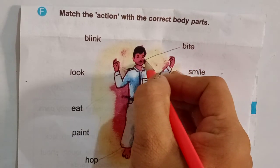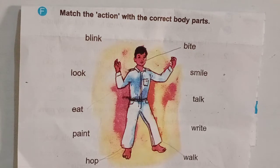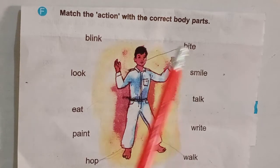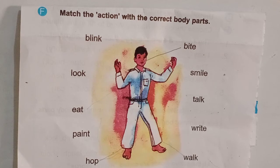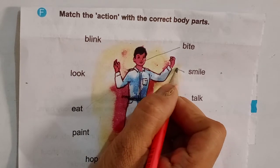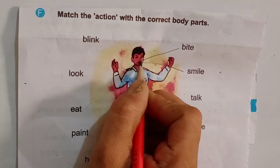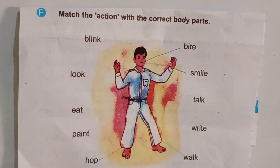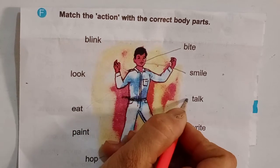Where is the mouth? Here is the mouth. The next word is 'smile'. How can we smile? From which part of the body can we smile? We can smile with our mouth, or you can say with our lips. How can we talk? We talk with our tongue, with our mouth.